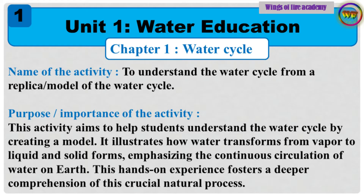Purpose and importance of the activity: This activity aims to help students understand the water cycle by creating a model. It illustrates how water transforms from vapor to liquid and solid forms, emphasizing the continuous circulation of water on Earth. This hands-on experience fosters a deeper comprehension of this crucial natural process.